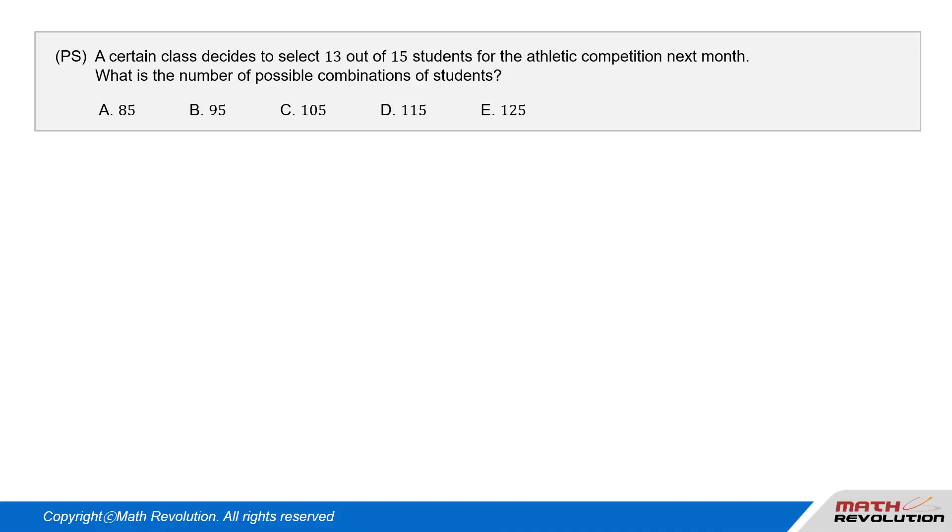Question 1. P.S. A certain class decides to select 13 out of 15 students for the athletic competition next month. What is the number of possible combinations of students?